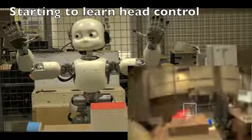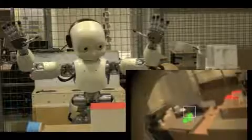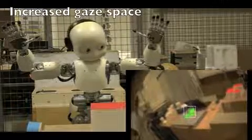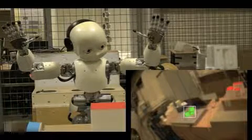Once the iCub has learnt to control its eyes, a constraint on neck movements is released. It can now learn how to move its eyes and head together and fixate on targets which were previously unreachable.